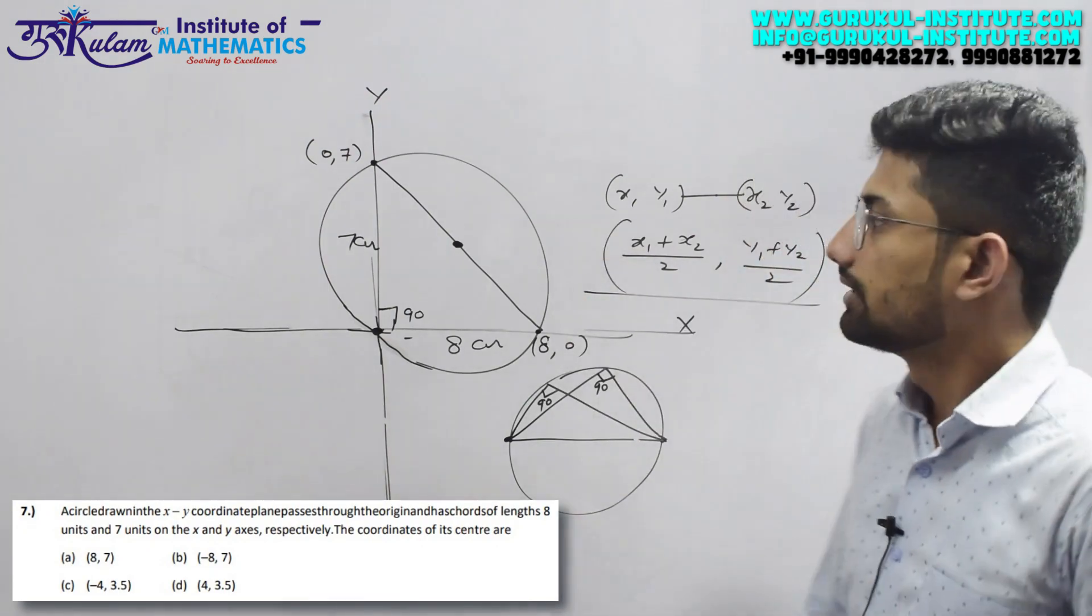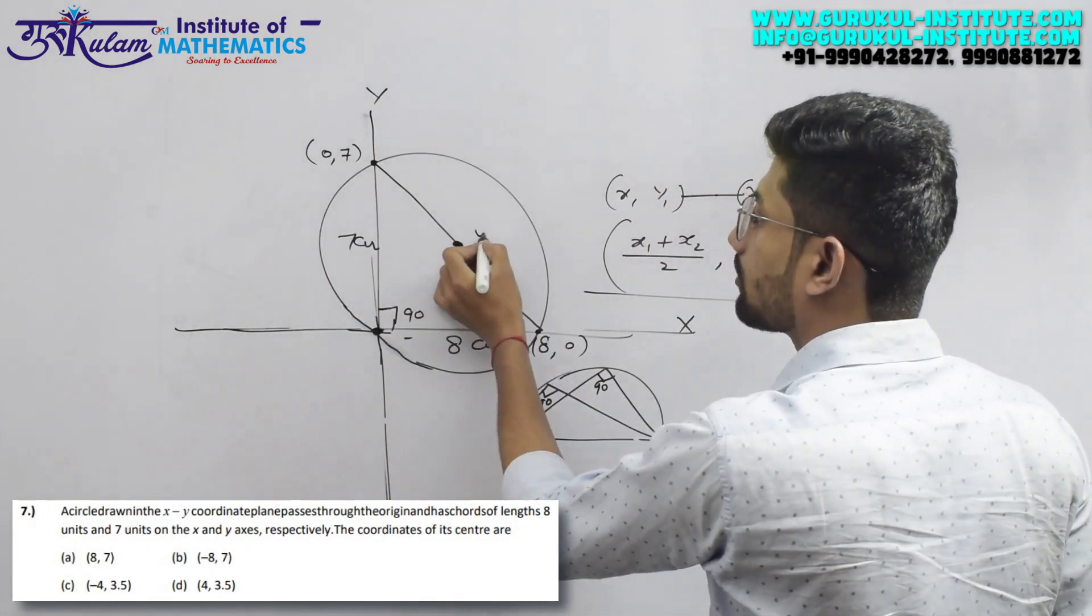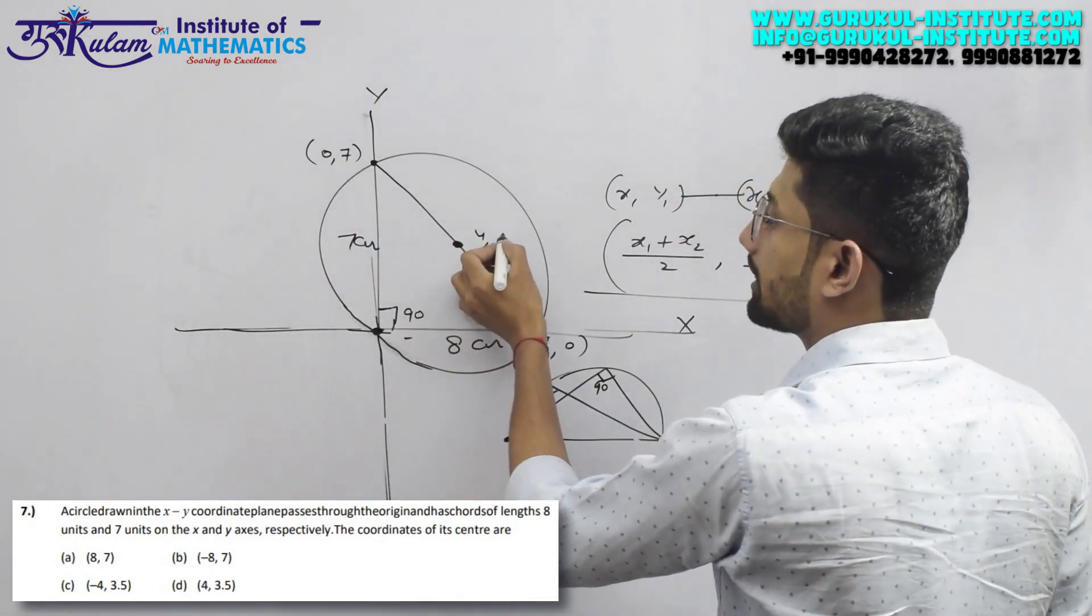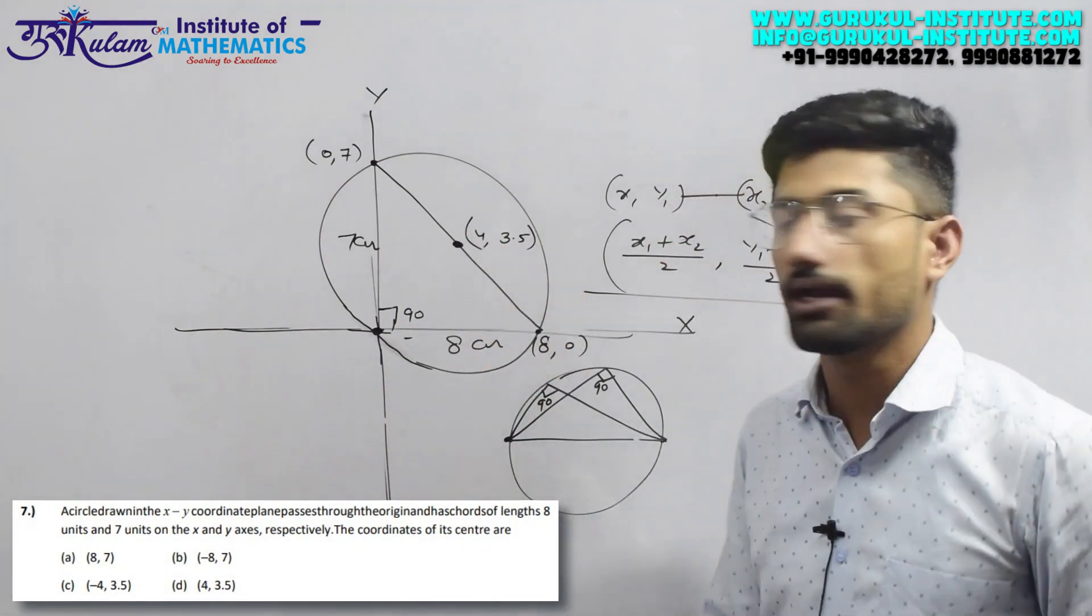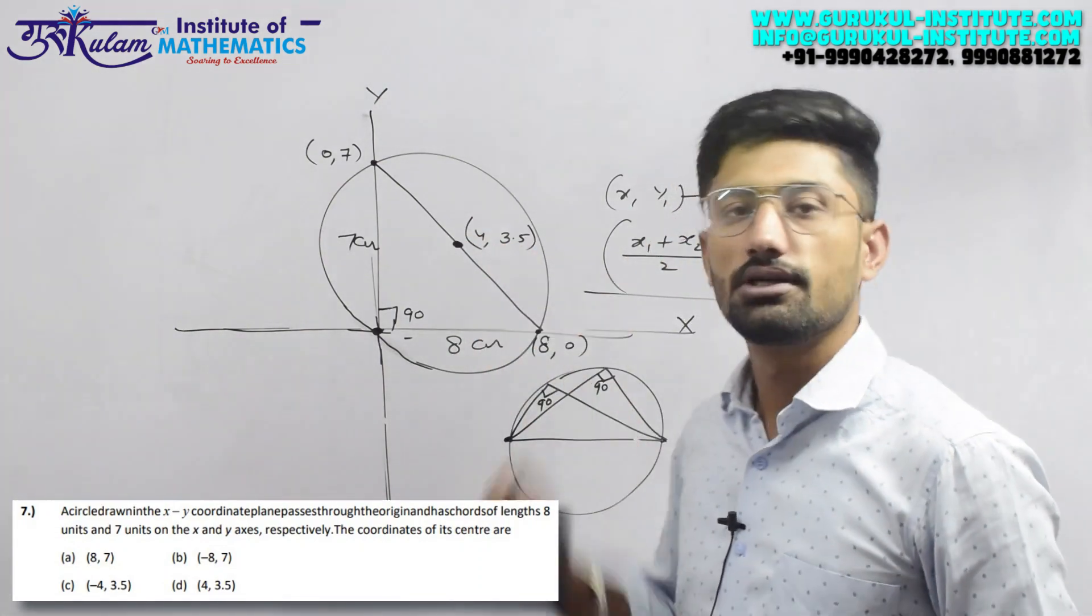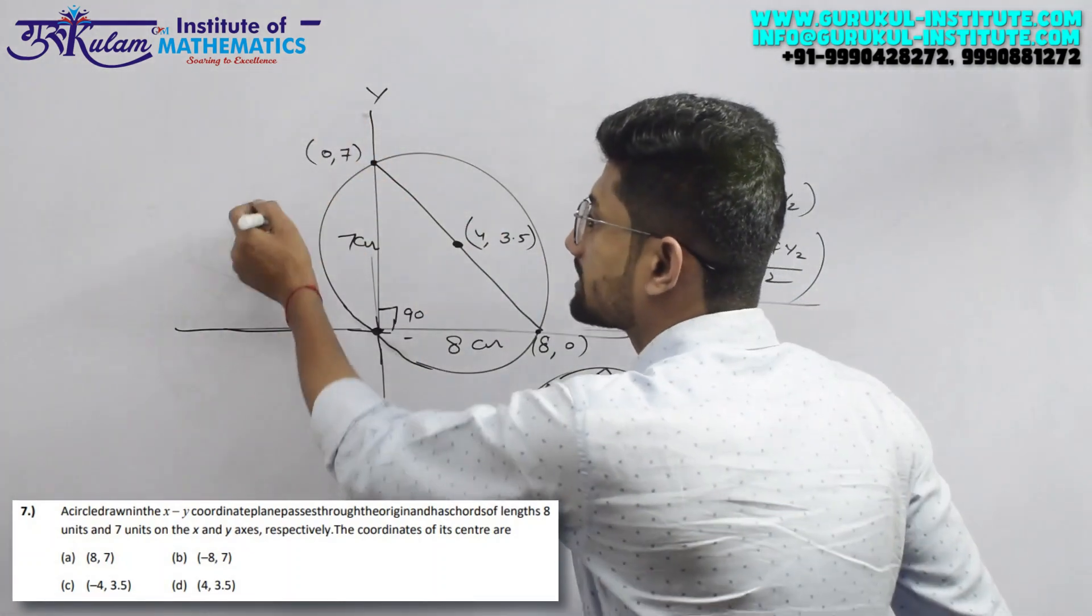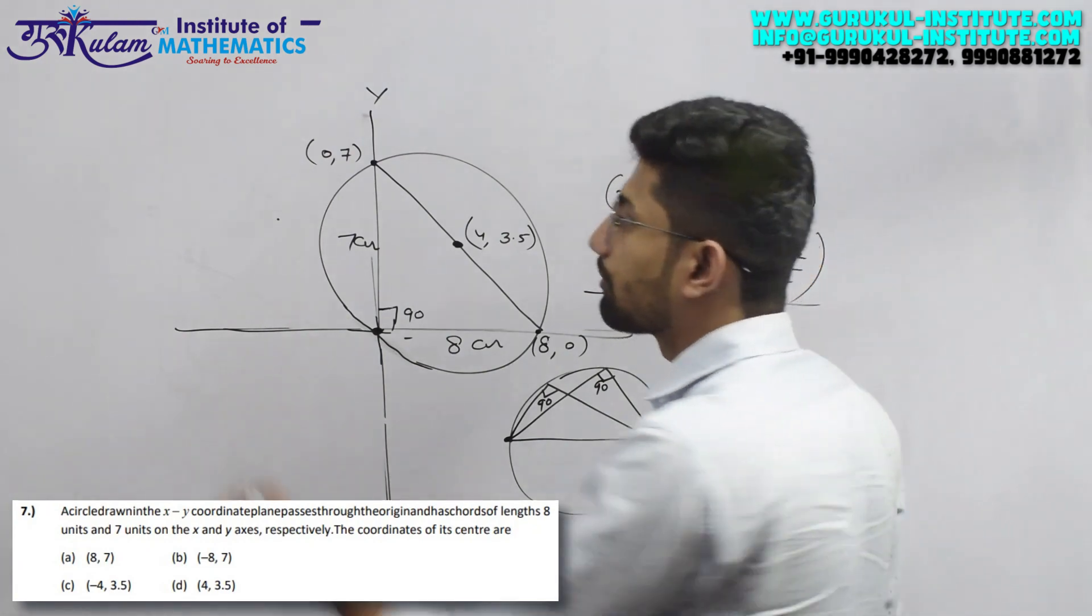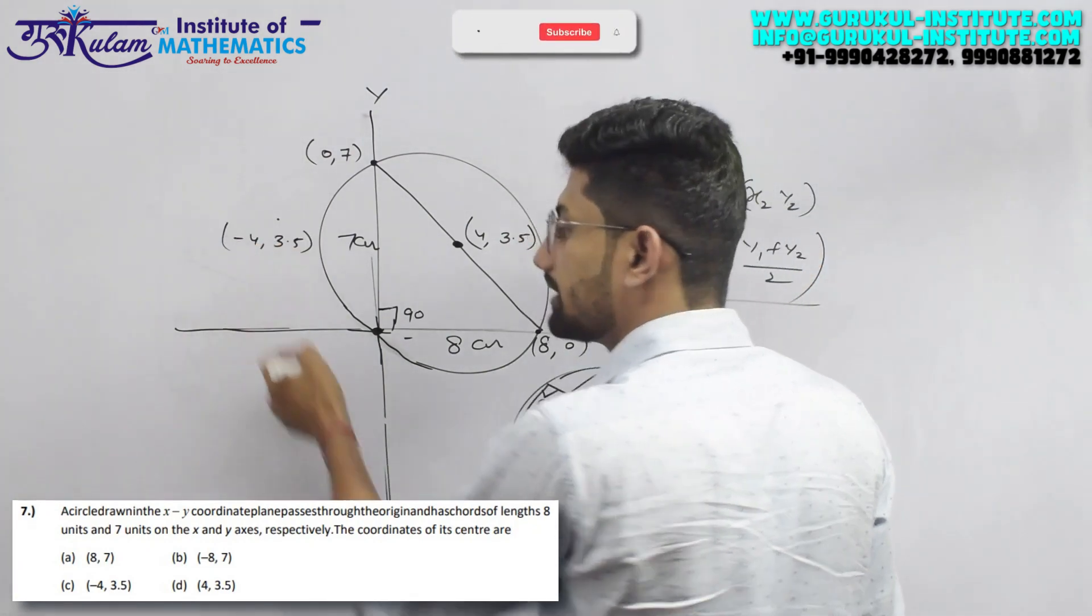So here the middle point coordinate will be 8/2 = 4, and 7/2 = 3.5. So the center coordinates are (4, 3.5). Now if this point was in the second quadrant, the coordinates would be (-4, 3.5). If it's in the third quadrant, (-4, -3.5).